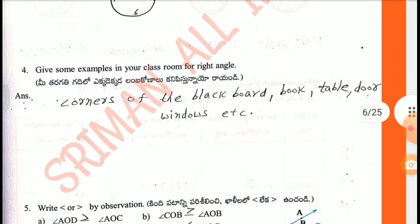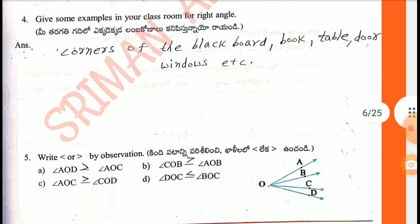Fourth one: Give some examples from your classroom for right angle. Corners of the blackboard, corners of the book, table, door, windows, etc.